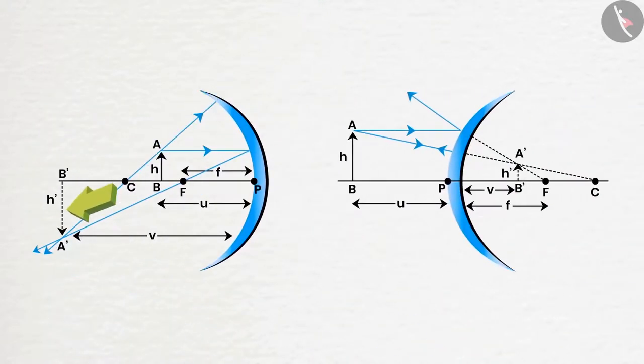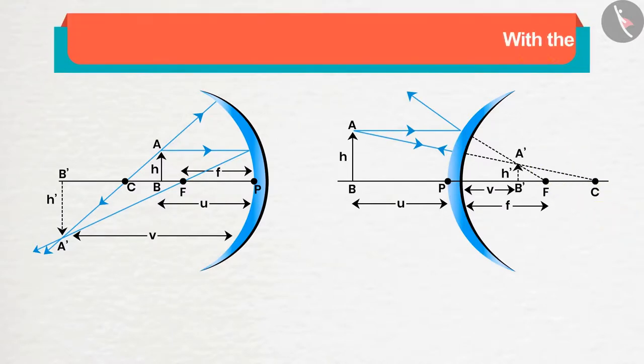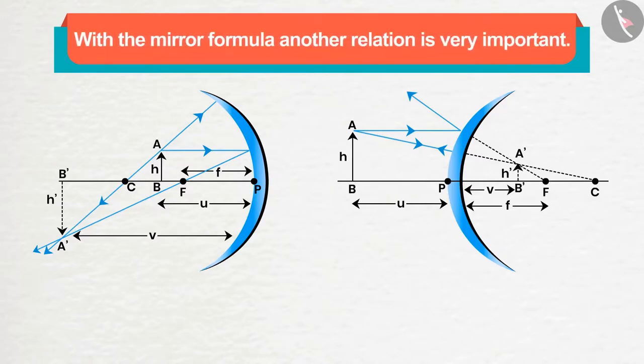We see that sometimes the image is larger than the object, and sometimes smaller. How large or small they are, along with the mirror formula, another relation is very important, which is called magnification.